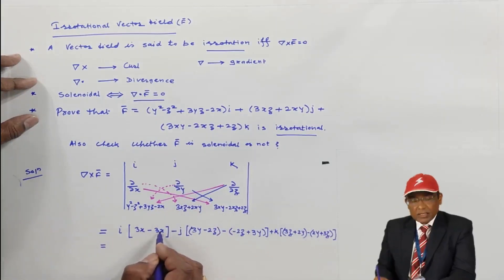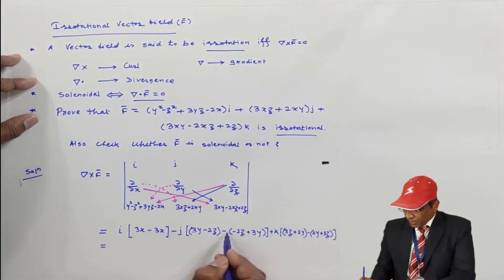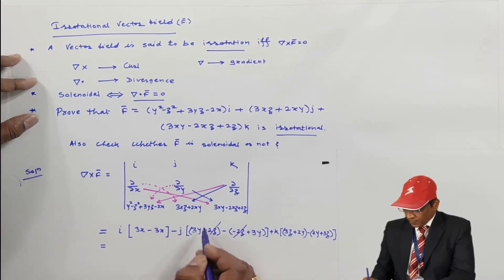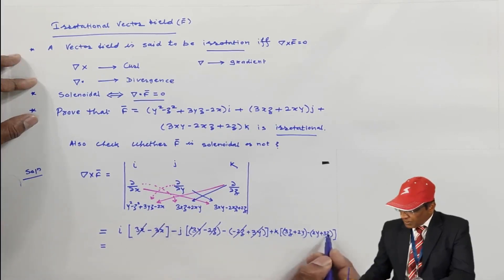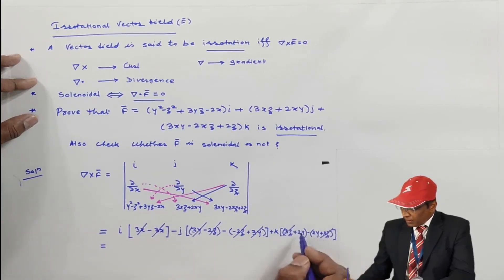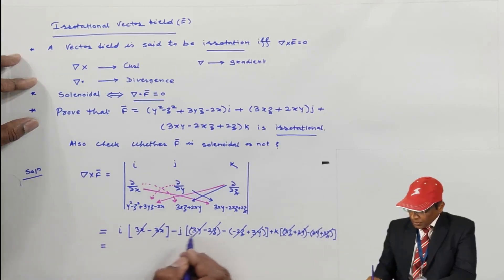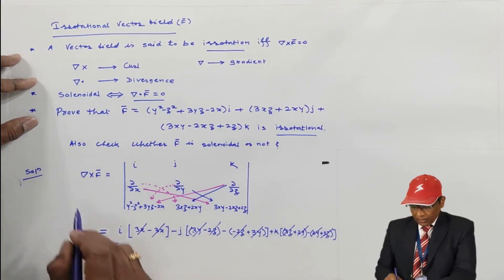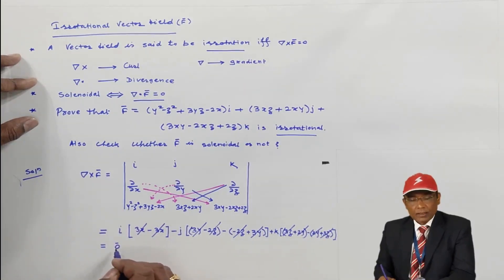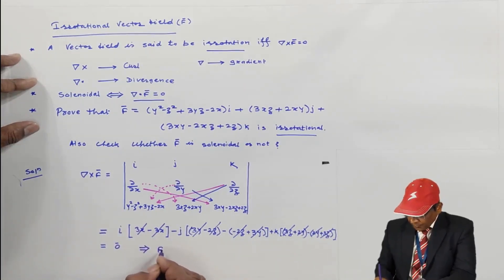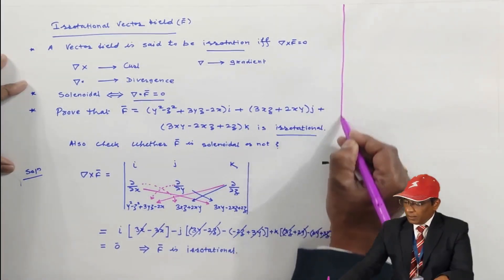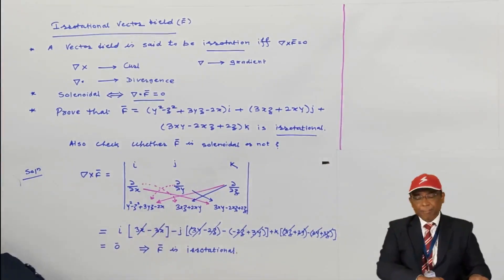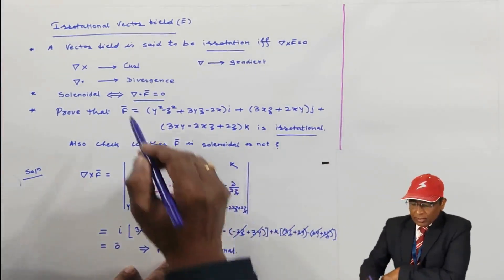After simplification: 3x − 3x = 0 for the i component; 3y − 2z − (3y − 2z) = 0 for the j component; and 3z + 2y − (2y + 3z) = 0 for the k component. So del cross f̄ = 0 vector, which implies f̄ is an irrotational field.